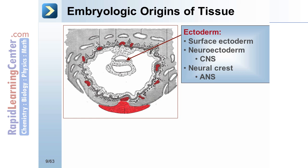Third is the neural crest, which gives rise to the formation of the autonomic nervous system, the dorsal root ganglia, celiac ganglion, Schwann cells, pia and arachnoid, melanocytes, chromaffin cells of the adrenal medulla, and enterochromaffin cells.